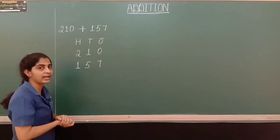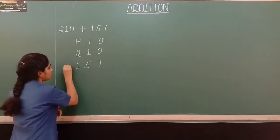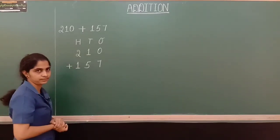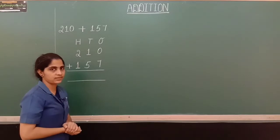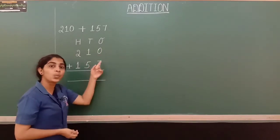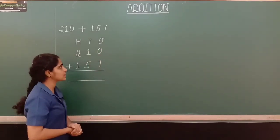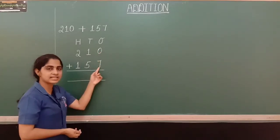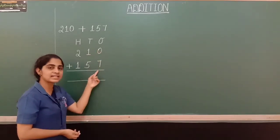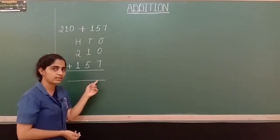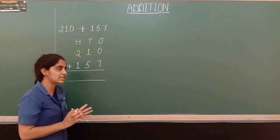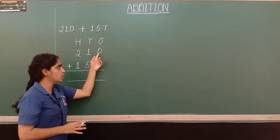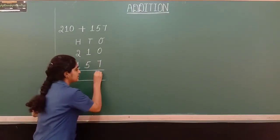We write 1 under 100's place, 5 under 10's place, and 7 under 1's place. Now we have to add these two numbers, so we put a plus symbol here. When we are adding the numbers, we have to start from 1's place. In 1's place, we have the digits 0 and 7. If 0 is added to any number, the answer is that number itself. So 0 plus 7 gives the answer 7.